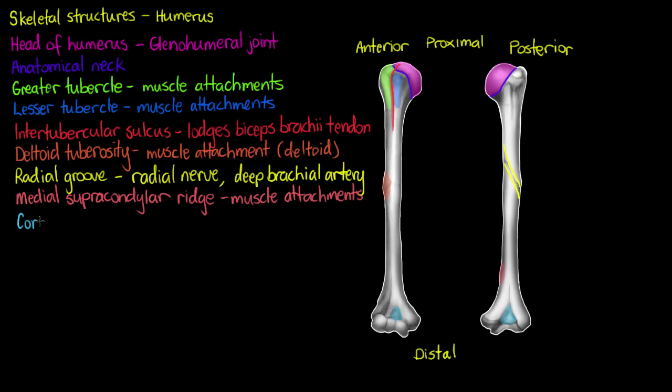Next on the distal ends of the bone, we have our coronoid fossa, which we can see on the anterior surface of the bone, and our olecranon fossa, which we can see on the posterior surface. Both of these fossae are indentations or depressions that act as articulation points for the bones of our forearm. We've got the coronoid fossa anteriorly, and the olecranon fossa posteriorly.